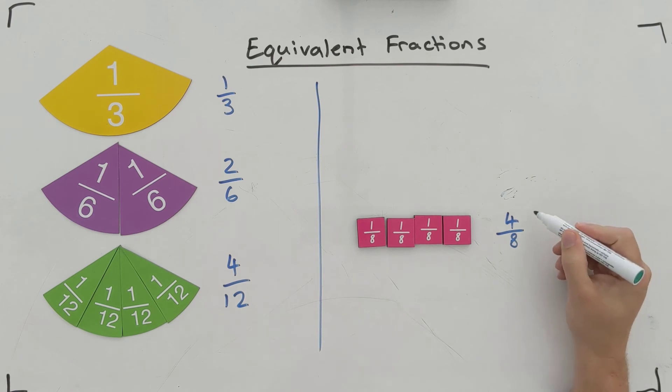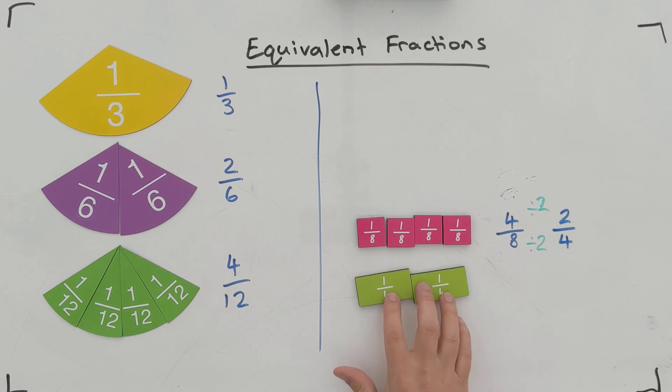What if I halved four, divide by two to half four, that would give me two. And then if I halved eight as well, that would give me four. So I've done the same thing to the top and the bottom and you can see that my four eighths, I can tell that it's the same as two quarters. And does that match up with the bars that we have? Yeah, it does, doesn't it?